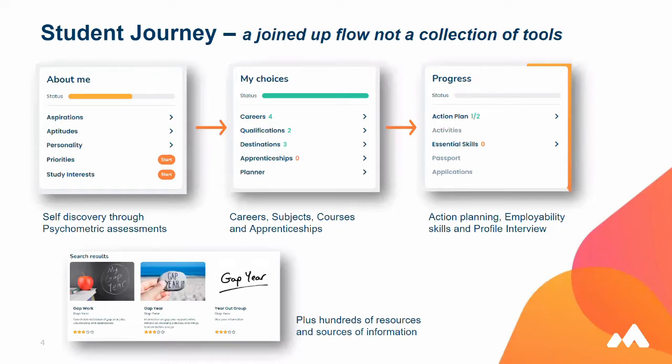The Progress section is all about how students are going to get there — action planning, activities, and students can log their own activities and what skills they've developed over the years. They've also got their passport, which is their online record of achievement and any applications they've made.